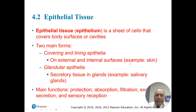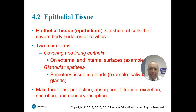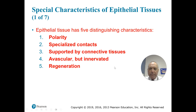The epithelium is a sheet of cells that covers body surfaces or cavities. There are two main forms: covering and lining on external and internal surfaces, like skin, and glandular epithelia, which are secretory tissues in glands — for example, salivary glands. The main functions of epithelium are to protect, absorb, filter, excrete, secrete, and for sensory reception. Epithelial tissue has five characteristics: it's polar, has specialized contacts, is supported by connective tissue, is avascular (no blood vessels), but is innervated, and regeneration occurs readily.